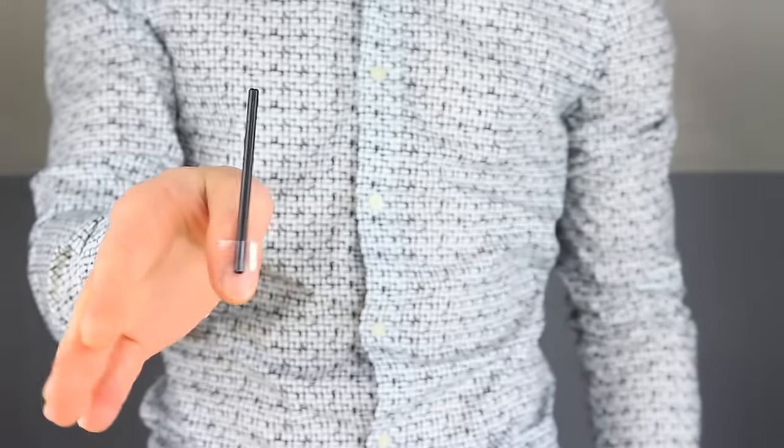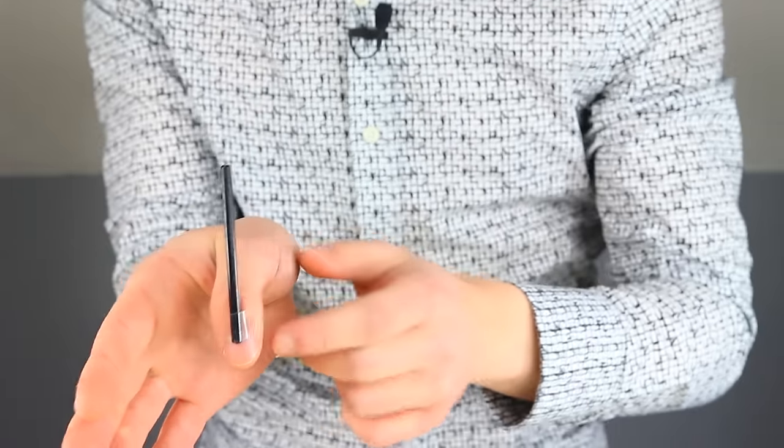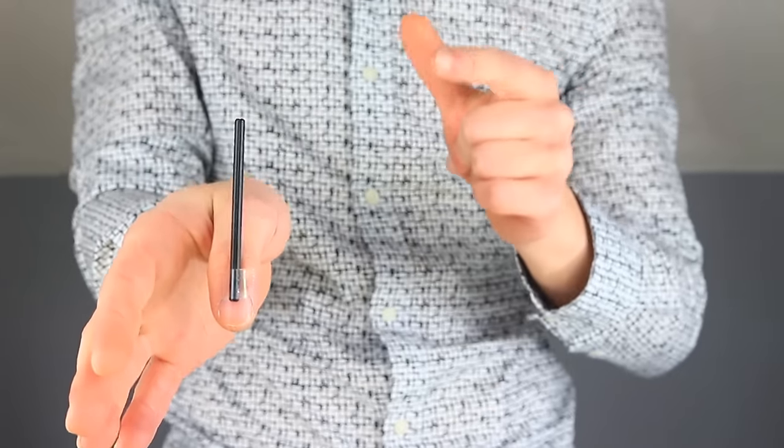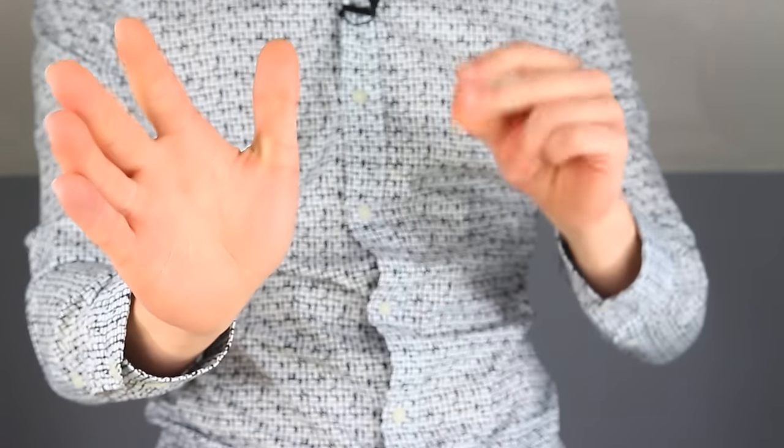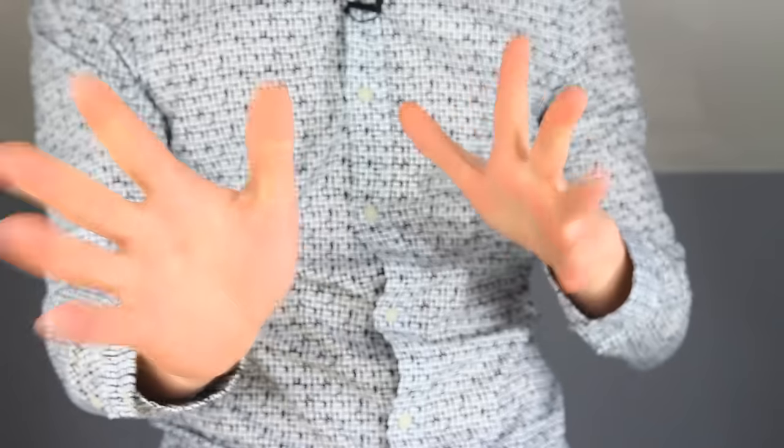The secret is simple. You're actually just going to apply tape to the axle so it sticks to your finger. Therefore, when you snap and lift up your finger, it disappears. Snap and it comes back.